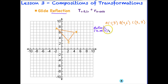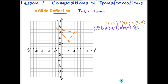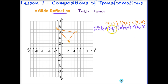When we reflect over the x-axis, just the y-coordinate changes signs. So A' becomes (-1, -7), B' becomes (4, -6), and C' becomes (2, -3). It's a good idea when performing a composition to keep track of your points every time, so you can transform the last set of points. You never want to go back to the original set — always perform the next transformation on the most recent set of points. Now I'm going to perform the glide transformation on A', B', C'.